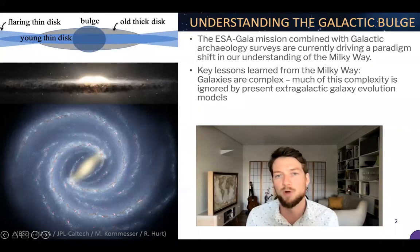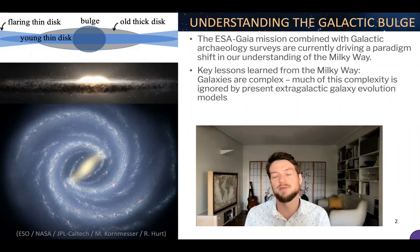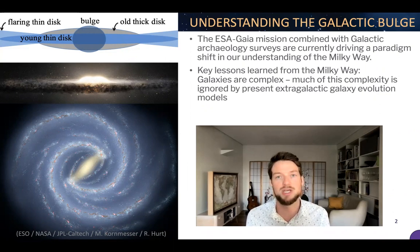So let me begin with our Milky Way galaxy. In my opinion, the ESA Gaia mission combined with other galactic archaeology surveys such as APOGEE and GALAH and RAVE and various others are currently driving a paradigm shift in our understanding of our Milky Way. In particular, I think that we're learning that relatively minor merger events such as Gaia-Enceladus, but also the Sagittarius Dwarf, can have a significant impact on how the disk of our own galaxy evolves.